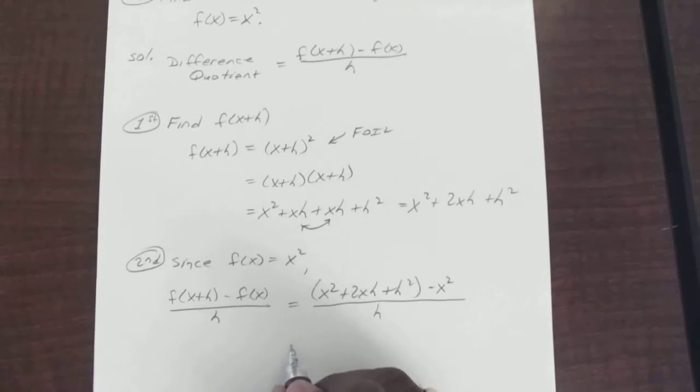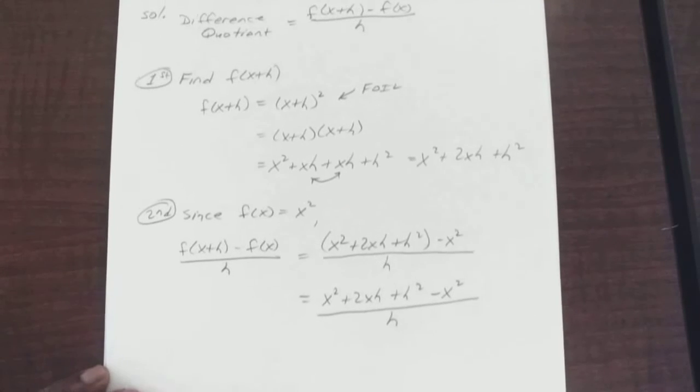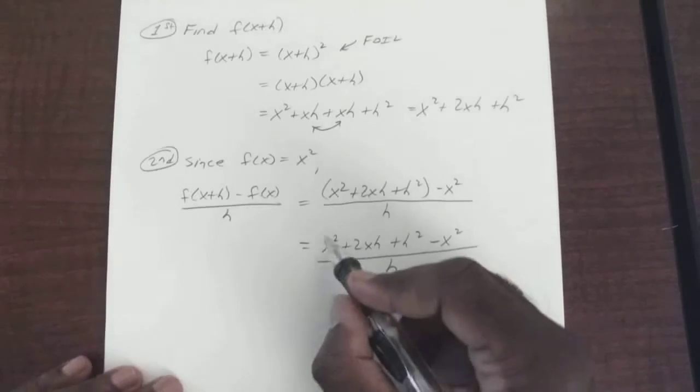Okay, so since this is positive, you can really just drop the parentheses. x squared plus 2xh plus h squared minus x squared all over h. The x's cancel out? Yep, the x squareds cancel out.